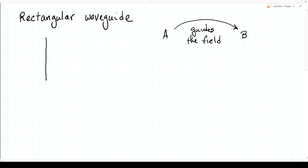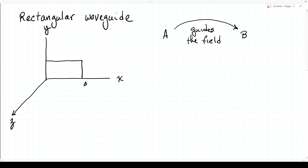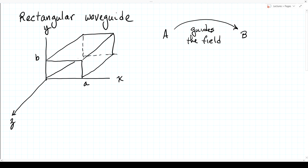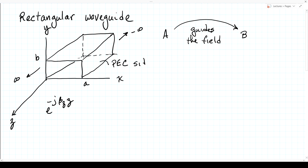We'll assume that the cross-section is as follows. Here's X and Y, and the Z-axis comes out of the page. We have a rectangular cross-section that has a width A and a height B. That extends infinitely far in the Z direction—back to minus infinity in one direction and plus infinity in the other. We're going to look at the case where the fields are propagating in the plus Z direction, so they have a phase factor e to the minus j beta_z Z. The sides are made of PEC material.